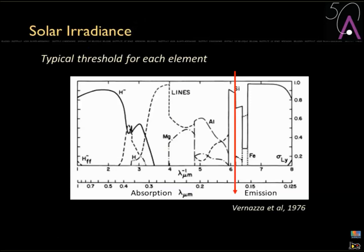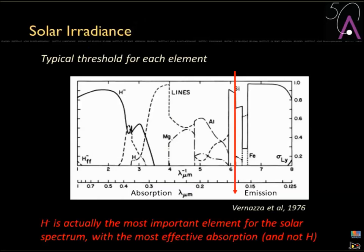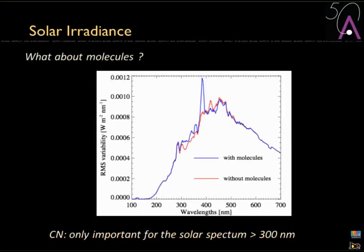This brings us back to the distinction between the absorption and emission spectrum. Very importantly for the solar spectrum, it's not just hydrogen but H-minus — a proton with an extra electron — that has the most effective absorption in the solar spectrum. We also have to take molecules into account; their role becomes more important above 300 nanometers, but for the UV part we are discussing here it is less critical.